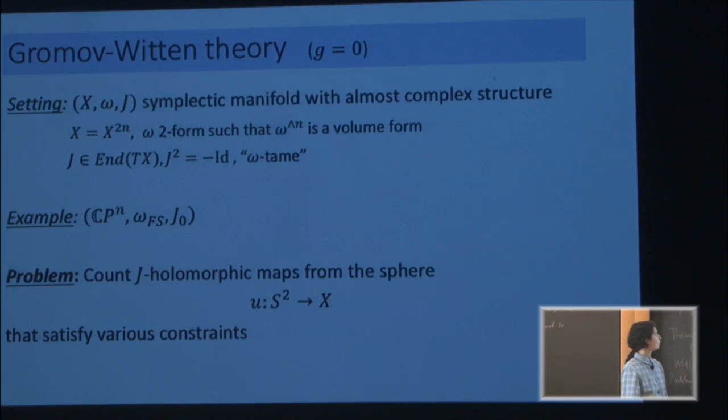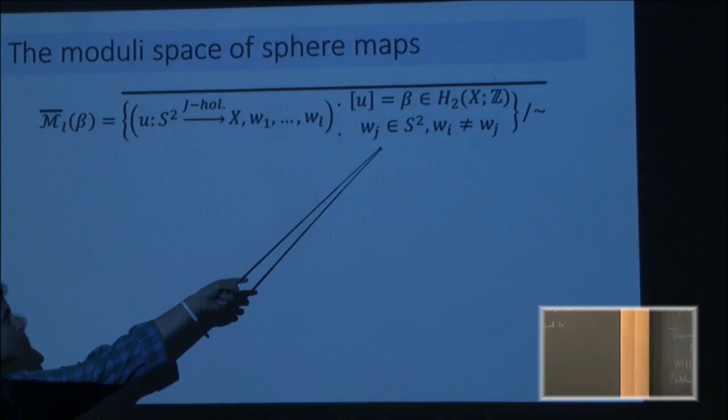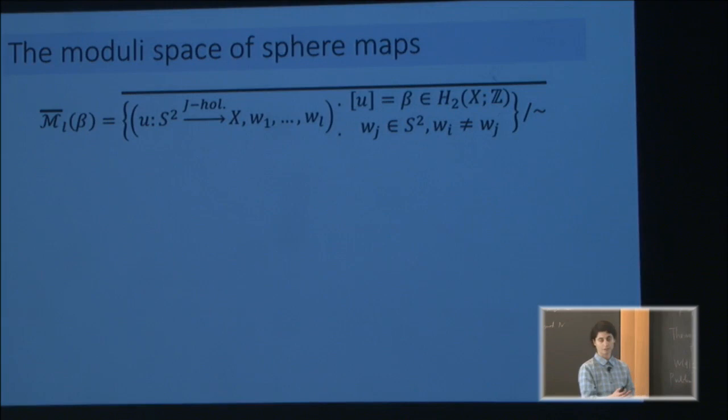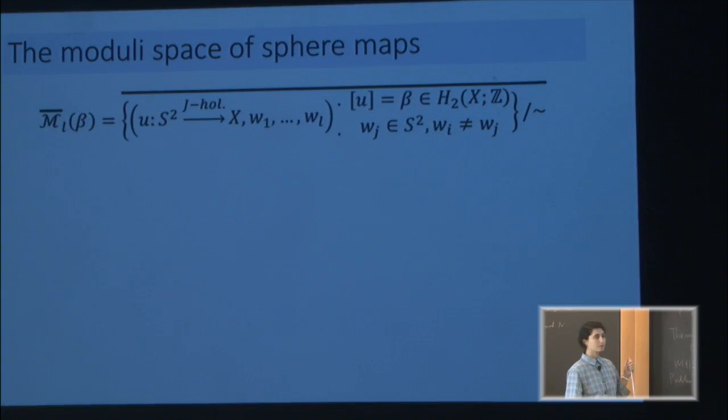There's a moduli space associated to this problem — a moduli space of holomorphic maps. On the domain, we fix distinct marked points. The equivalence here is just reparameterization; we mod out by reparameterization. The bar on top is compactification — we want the space to be compact, because eventually we want to count stuff, so we better work with compact spaces.